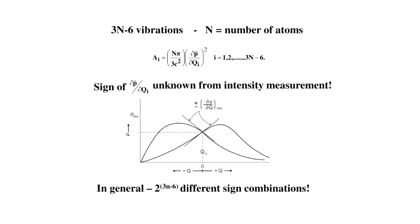There are 3N minus 6 vibrations in a molecule, where N is the number of atoms. The infrared intensity is proportional to the square of the dipole moment derivative vector with respect to normal coordinates. Since there are 3N minus 6 such relations, we can measure the intensities, but when we try to determine the derivative, we do not know whether that derivative is plus or minus, because when you take the square root, the sign is indeterminate.